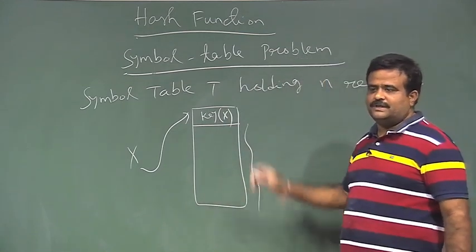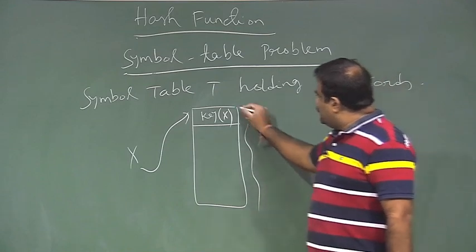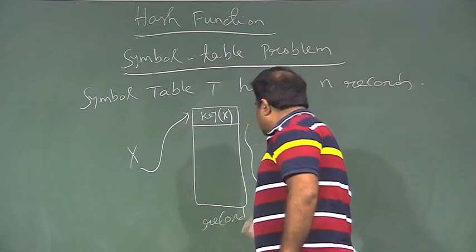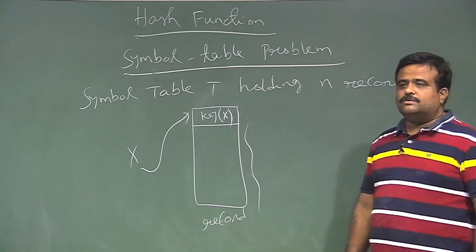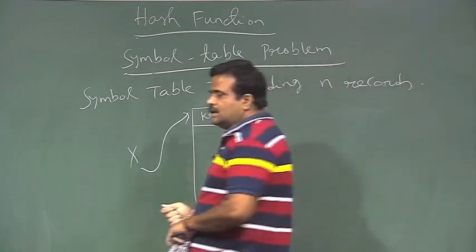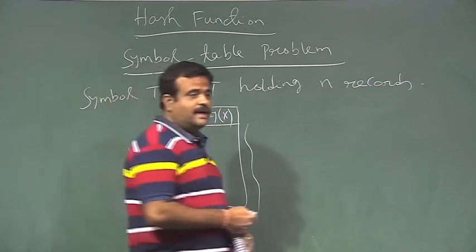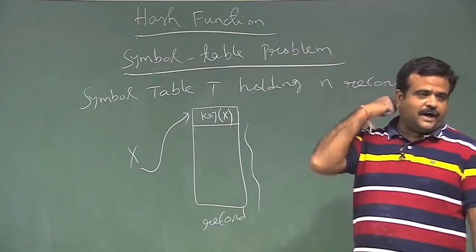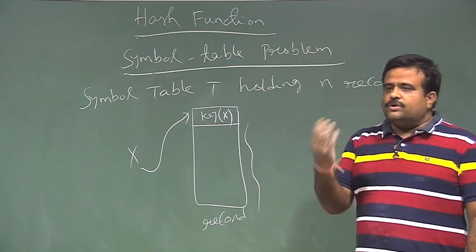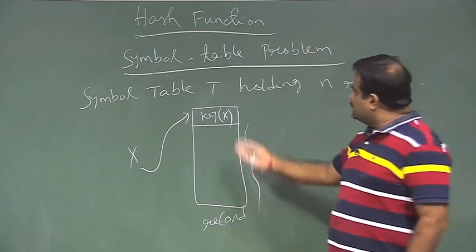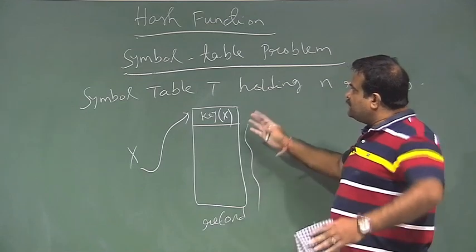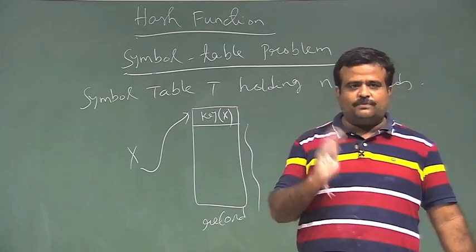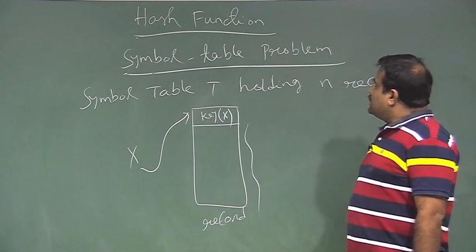The remaining fields are some satellite data. One field is the unique identification of this record. For example, a student record has roll number, name, GPA, address and so on. We need to find one field used for unique identification of the student — maybe the student roll number or PAN card number. That is the key of x. The problem of maintaining n records in a table is called the symbol table problem.